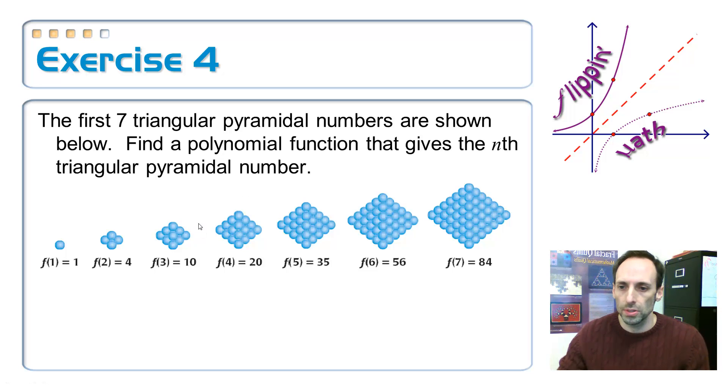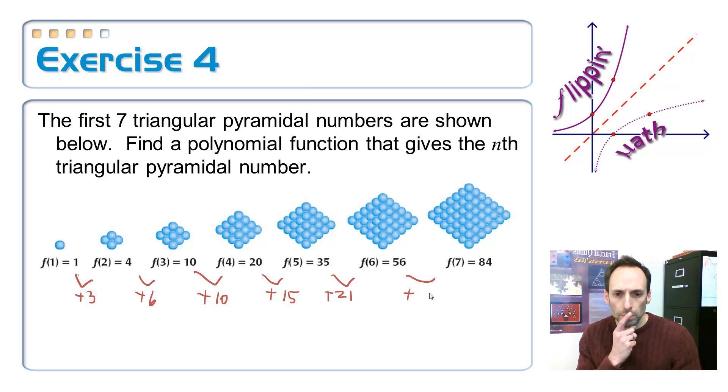Let's first find the finite differences. Going up by plus 3, next one 10 minus 4 equals 6. Then I'm going up by 10, by 15, by 21, and then 28.